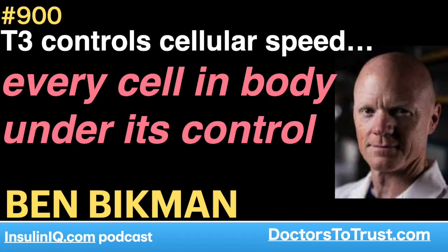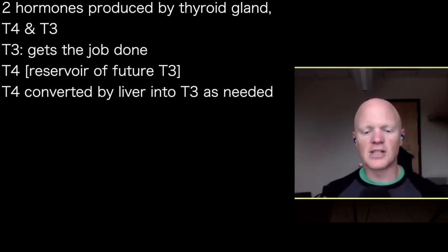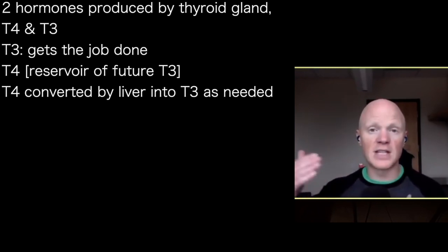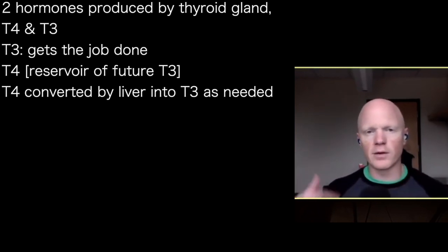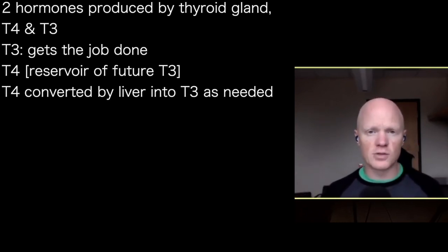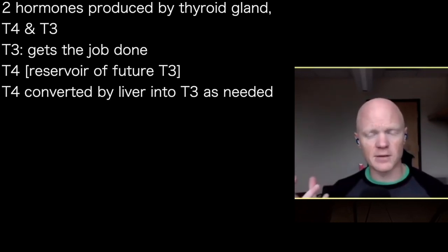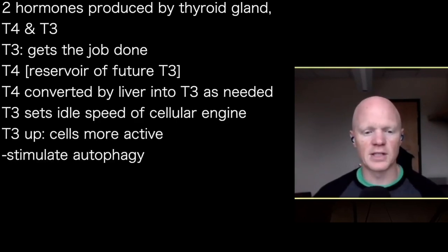There are two hormones produced from the thyroid gland: T4 and T3. T3 is really where the rubber meets the road — that's the hormone that gets the job done. T4 acts more as a reservoir of future T3, flowing through the blood. When the body needs more T3, the tissues — mostly the liver — will take in that T4, convert it to T3, and release it so it can do what thyroid hormone does.